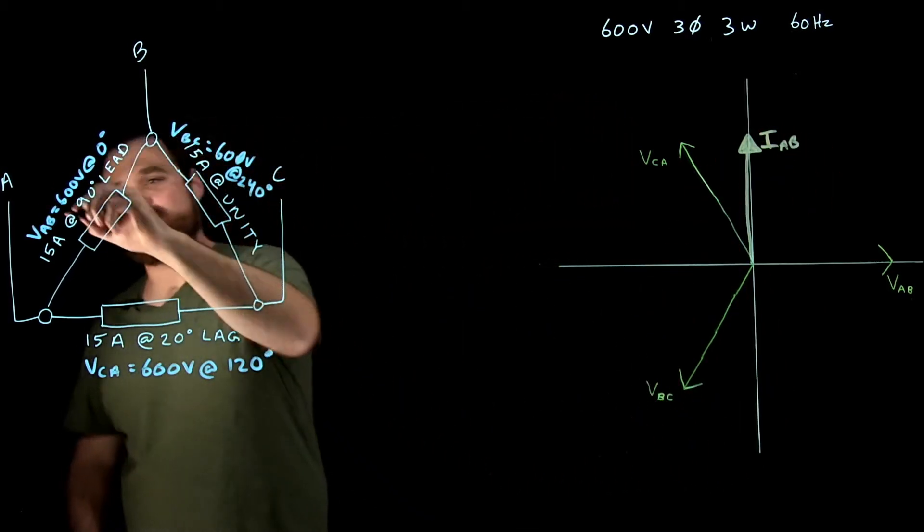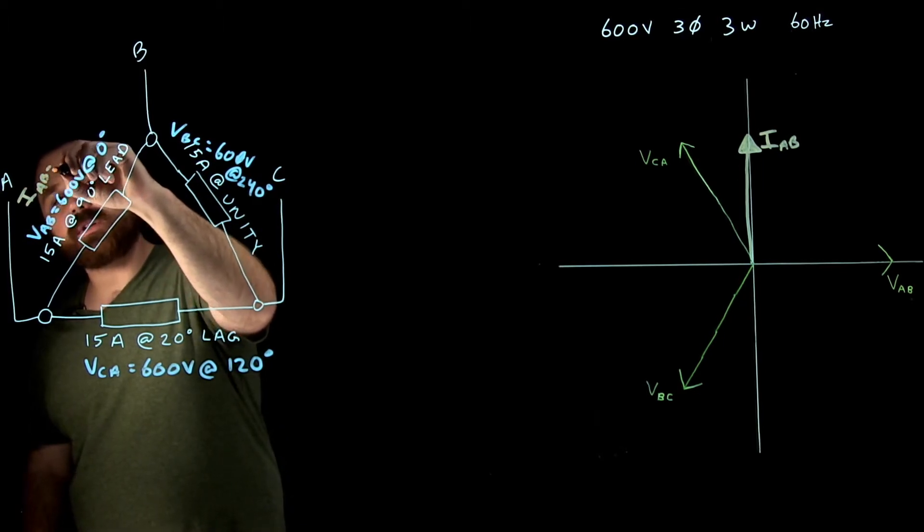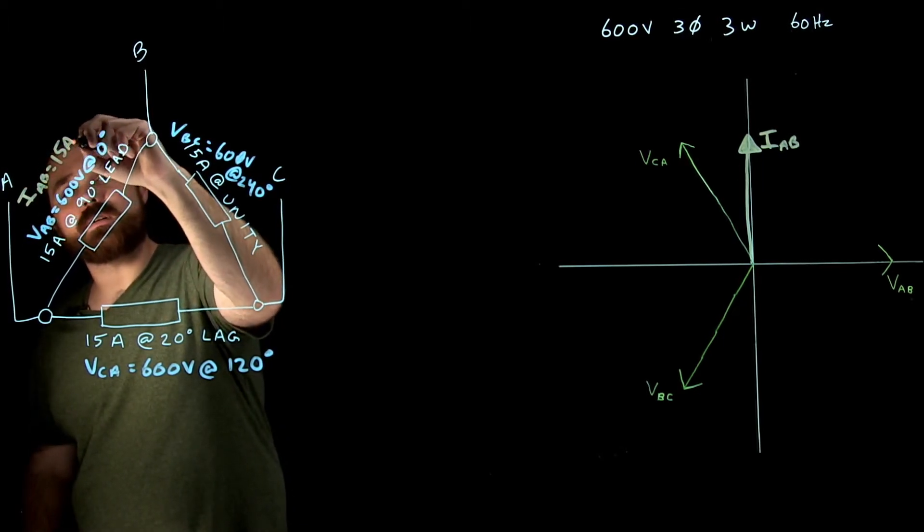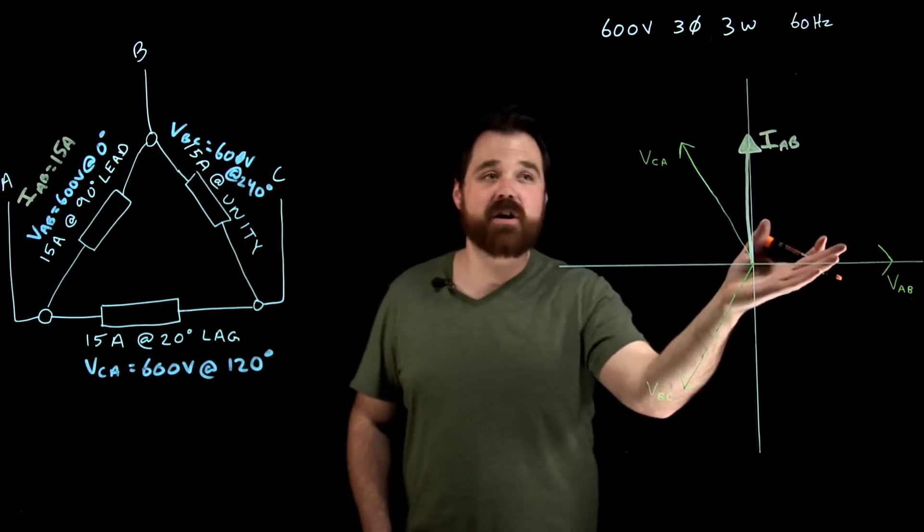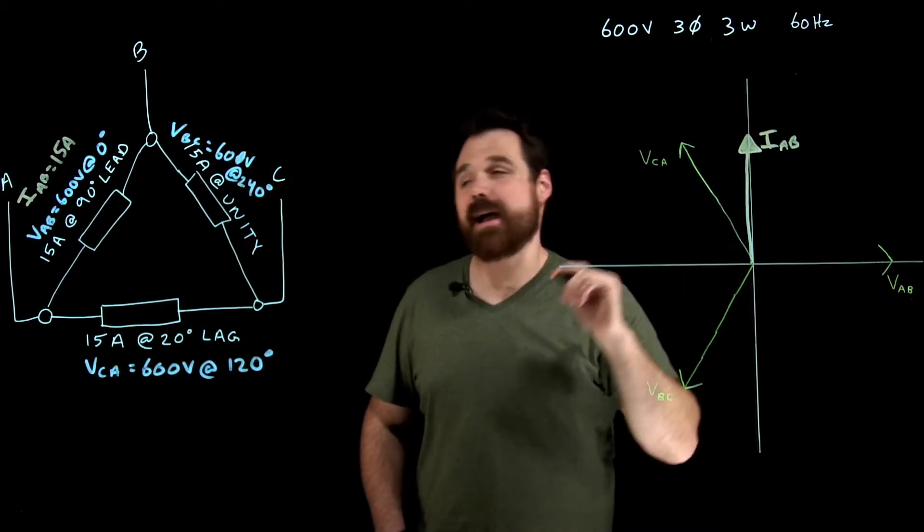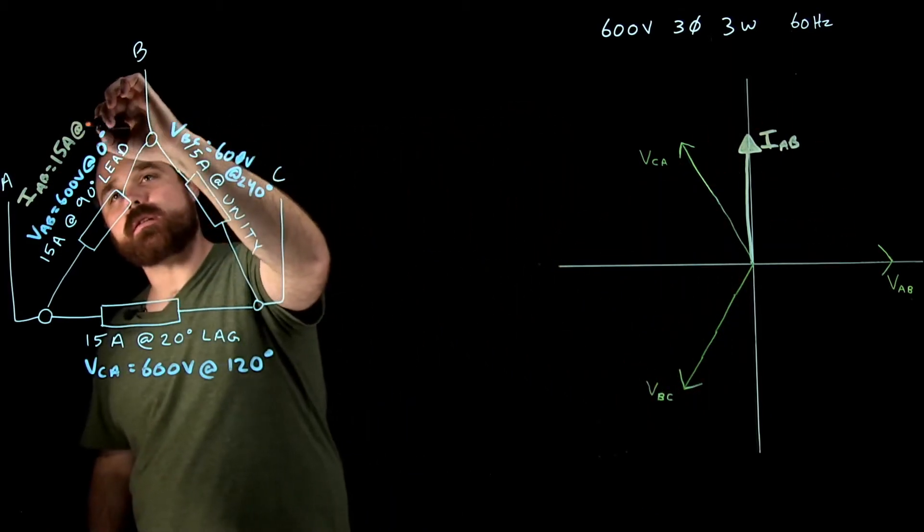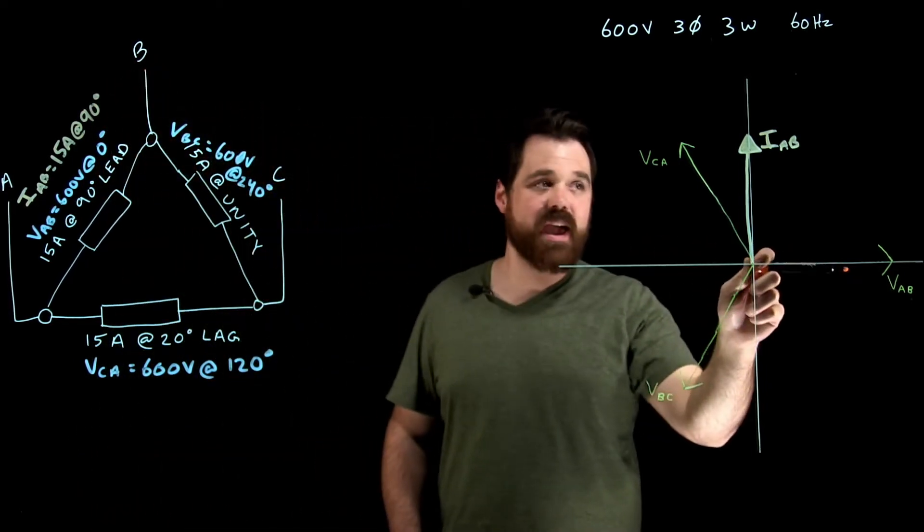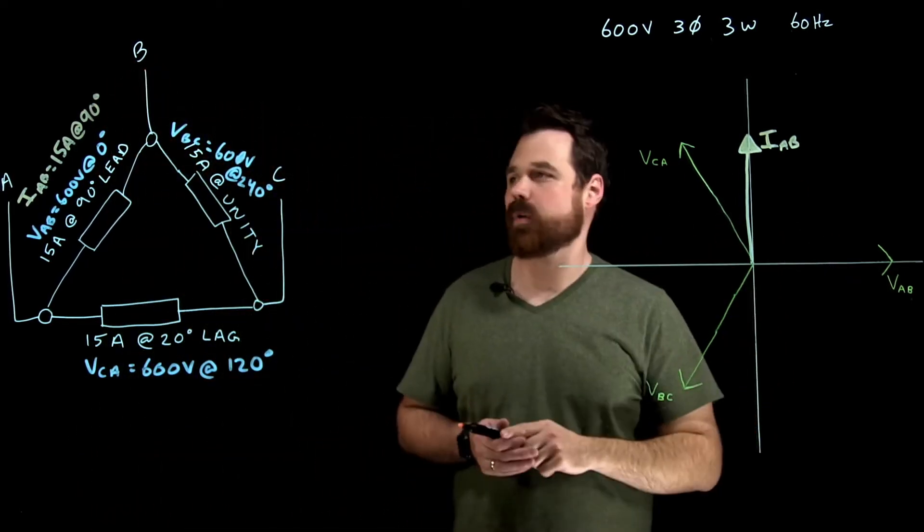This gives me I A to B, which means I A to B, we know is 15 amps, and it is going to be at, on my phasor diagram, at 90 degrees. And that's just because it's leading the A to B by 90.